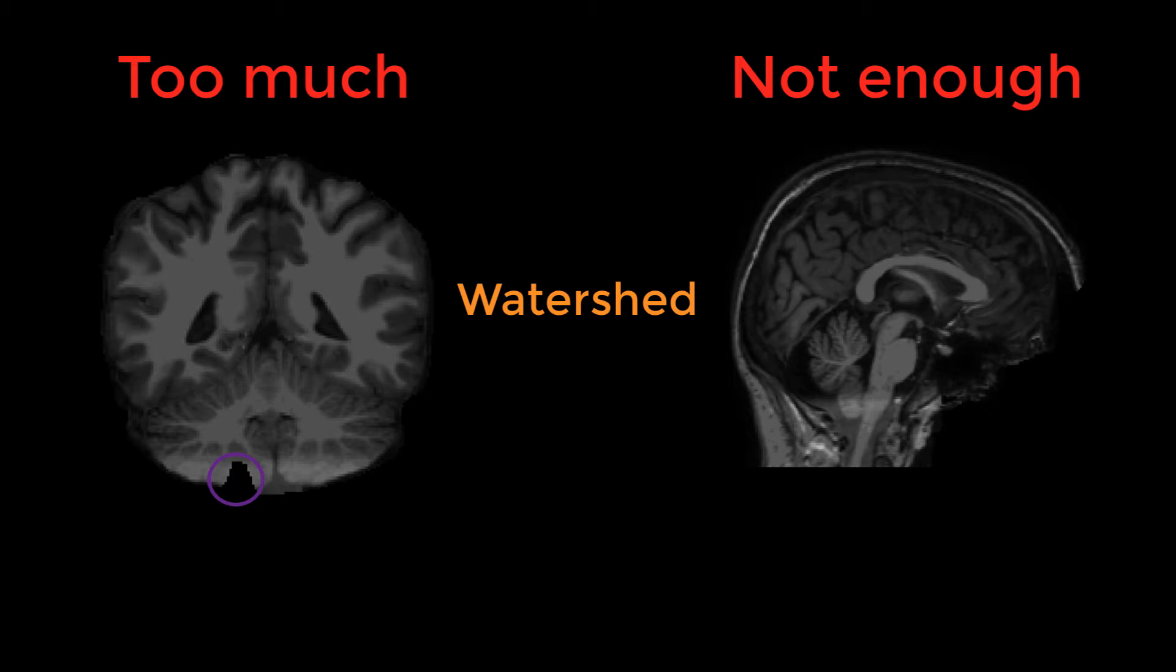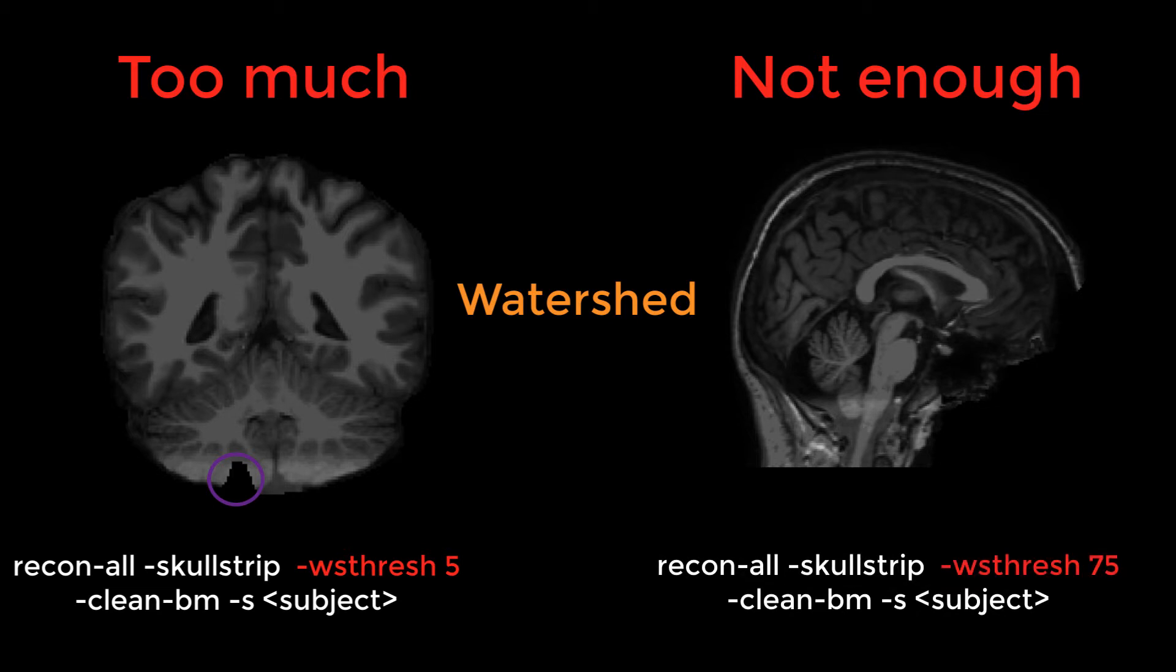Lower values for the WS Thresh option in Recon All will remove more skull, while higher values remove less skull.